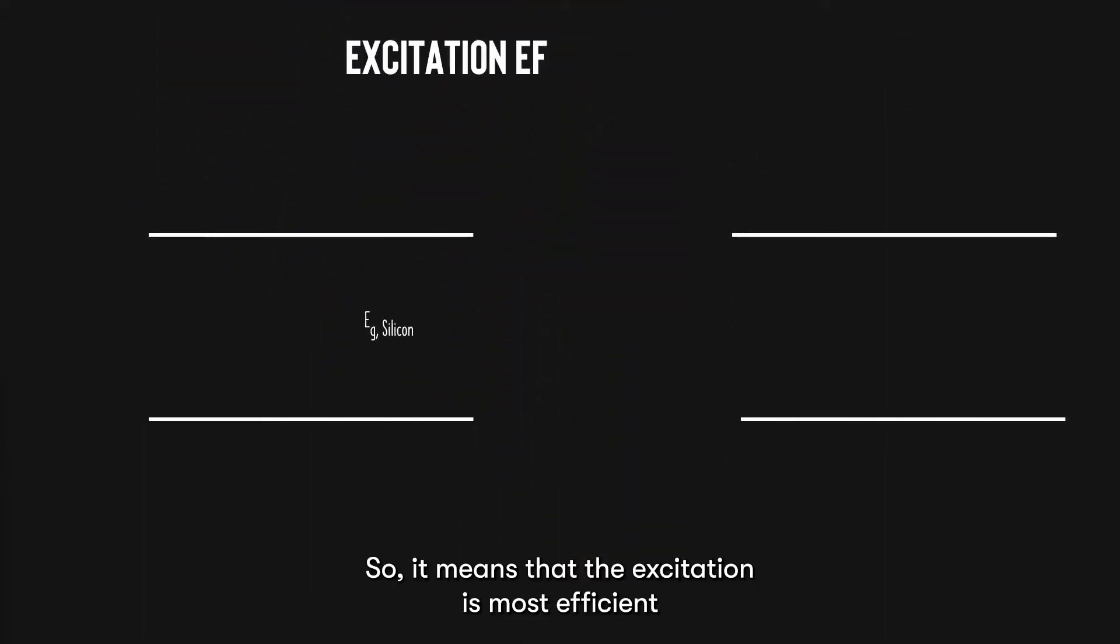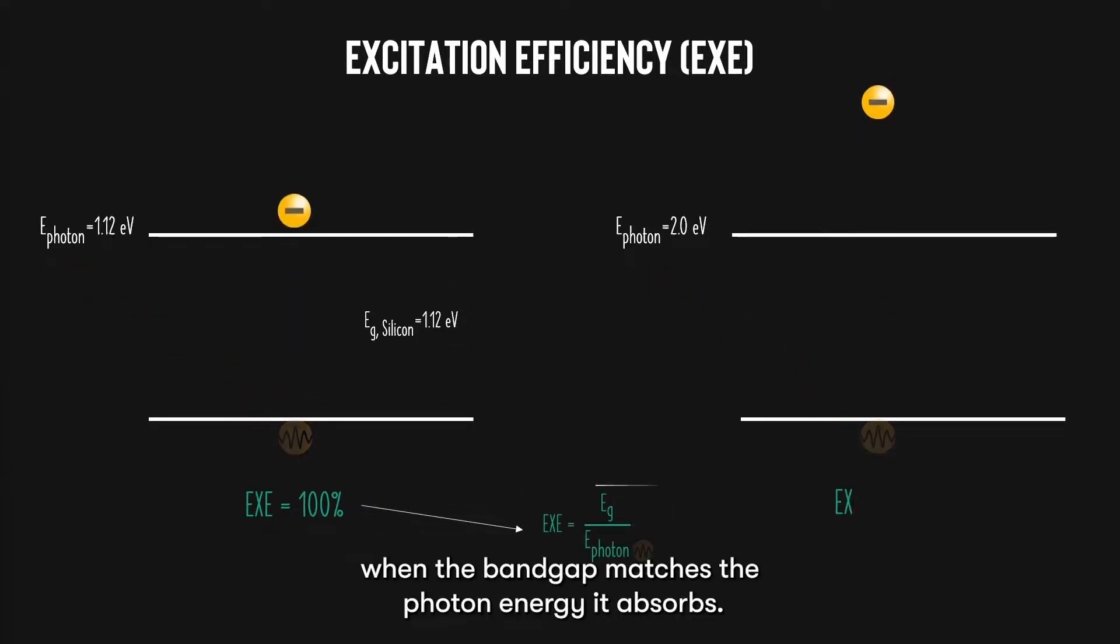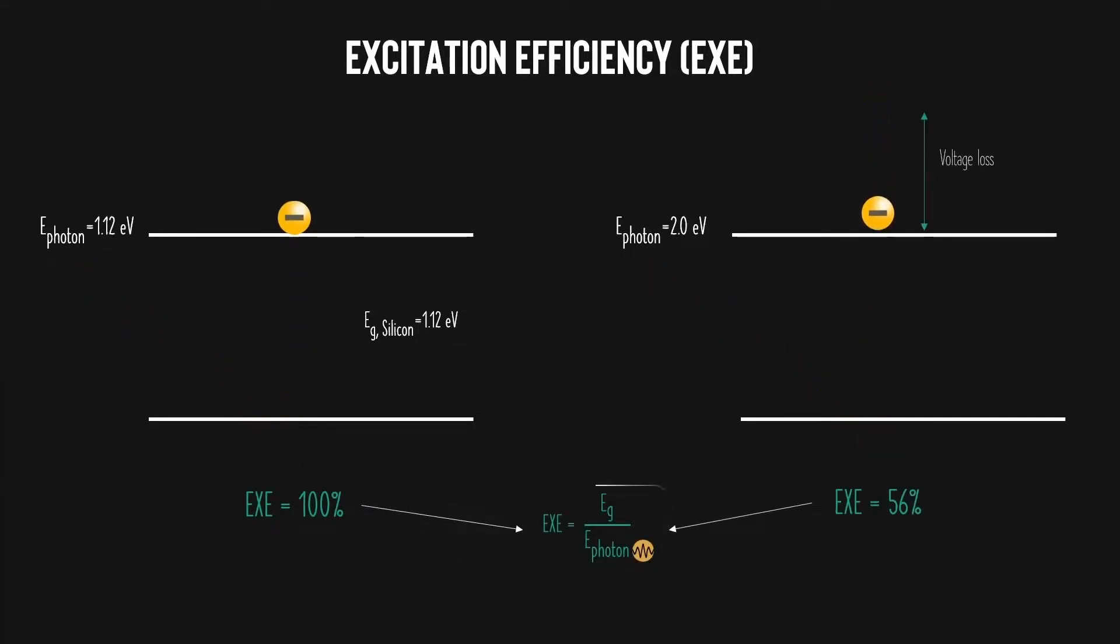So it means that the excitation is most efficient when the band gap matches the photon energy it absorbs. Silicon with a band gap of 1.12 electron volts can only achieve 100% excitation efficiency when the photon energy it absorbs is 1.12 electron volts as well.